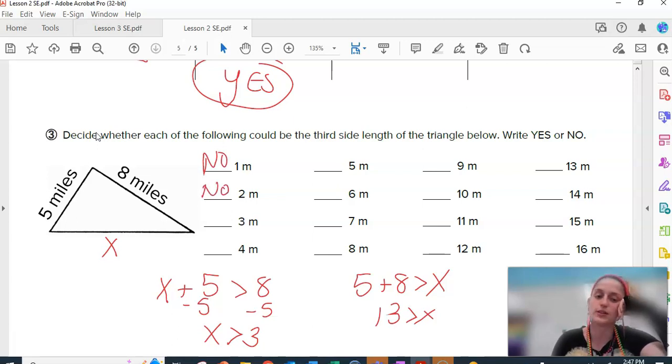What about 3? 3 is not bigger than 3. Is 4 bigger than 3? Yes. Is 4 also smaller than 13? Yes. So, that one's a yes. So, you're going through each of these to check.